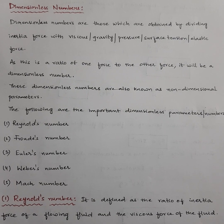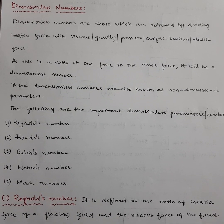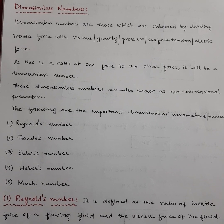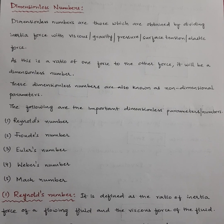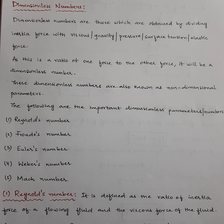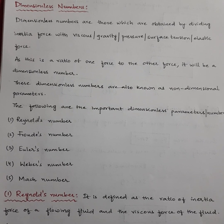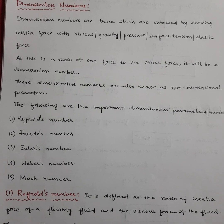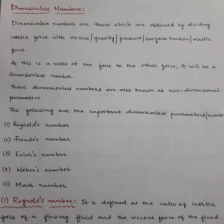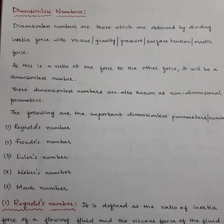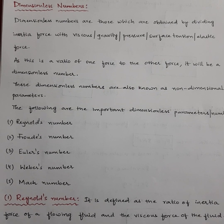These 5 types of dimensionless numbers are obtained by dividing inertia force with the other 5 forces. Totally we have 6 forces acting in a moving fluid, which is generally considered in model analysis or dimensional analysis. These 6 forces are: inertia force, viscous force, gravity force, pressure force, surface tension force, and elastic force. Inertia force is kept constant, and we divide it with respect to the other 5 forces individually, resulting in 5 non-dimensional parameters called dimensionless numbers.